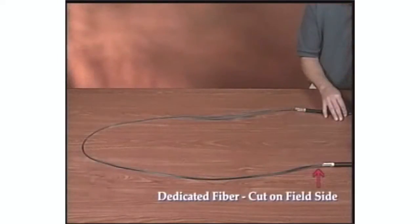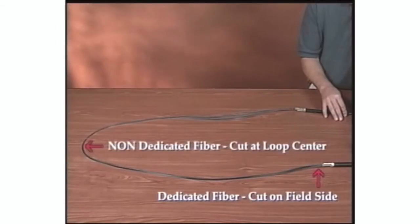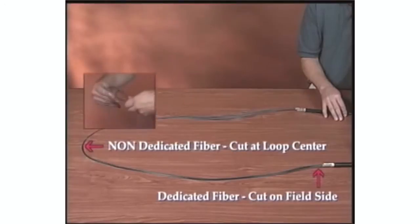For a dedicated fiber application, cut the fiber on the field side of the ballooned cable. For a non-dedicated fiber application, cut the fiber at the center of the loop. Cut the ribbon to be spliced.